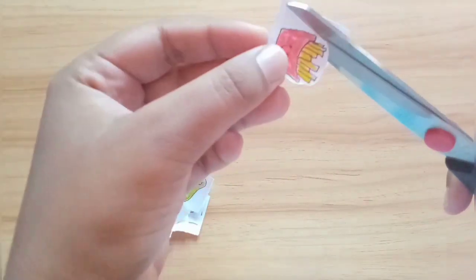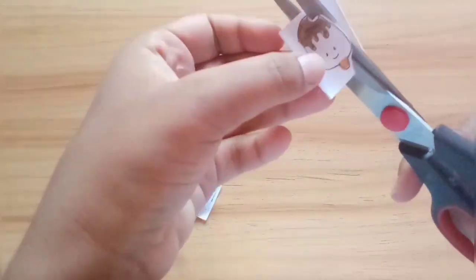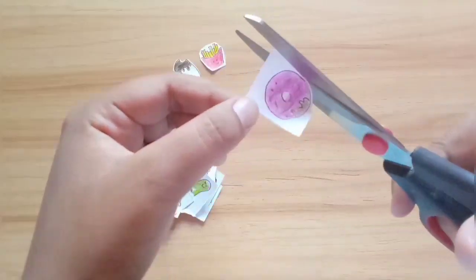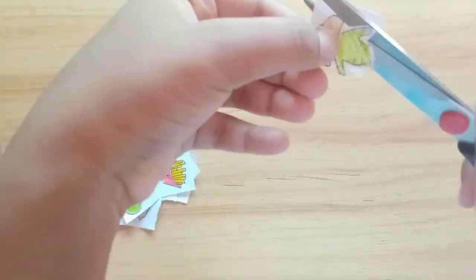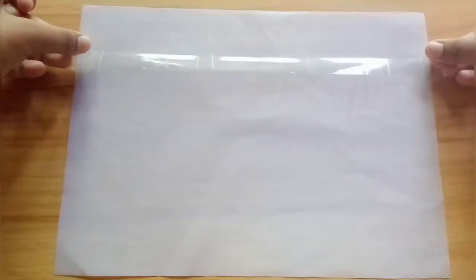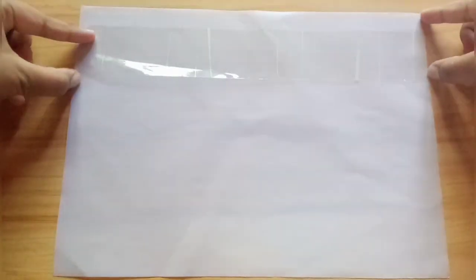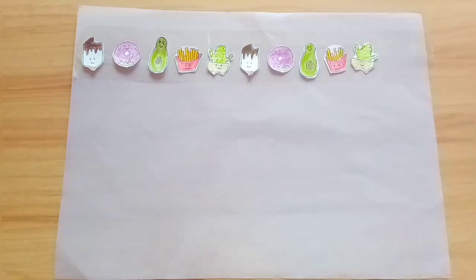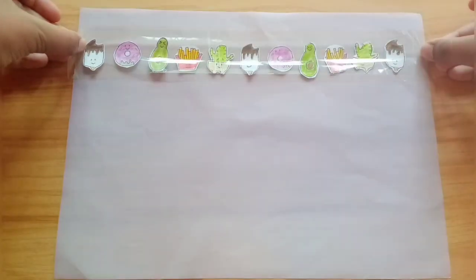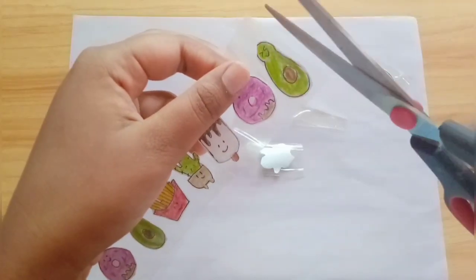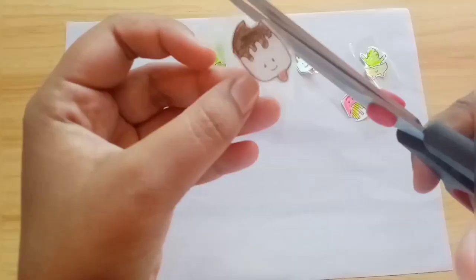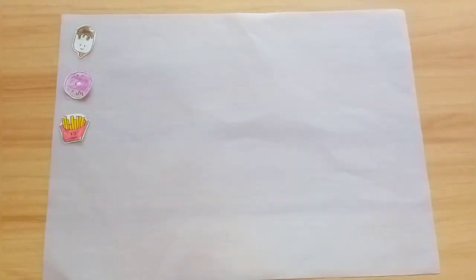After you've separated the doodles, trim them. Next, take the parchment paper and stick clear tape onto it. Place the sticker on the tape and cover it with another layer of clear tape. Once done, peel the tape and trim the sticker. You can even place them back on the parchment paper to create a sticker sheet.